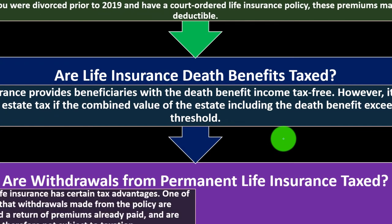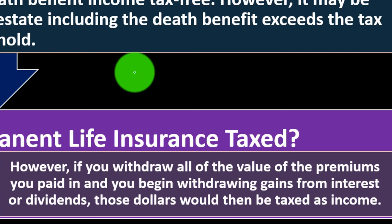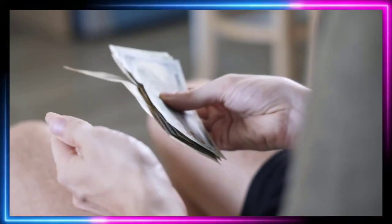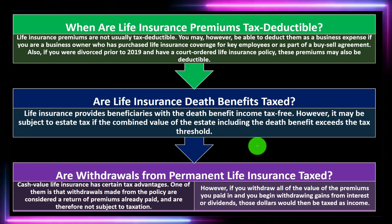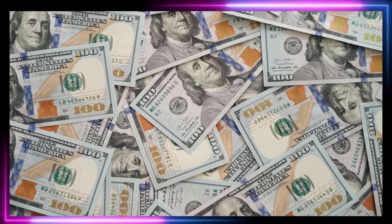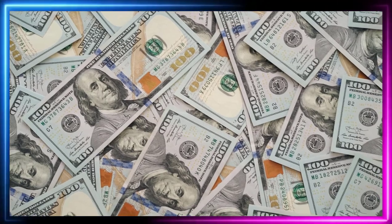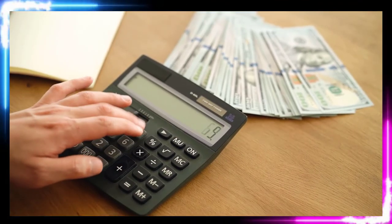Are withdrawals from permanent life insurance taxed? Cash value life insurance has certain tax advantages. Withdrawals made from the policy are considered a return of premiums already paid and are therefore not subject to taxation. However, if you withdraw all of the value of the premiums you paid in and begin withdrawing gains from interest or dividends, those dollars would then be taxed as income. The question becomes: when you pull money out, can you count it as a return of your original principal — not the growth — and therefore not subject to taxes? If so, that represents a tax-advantaged situation.